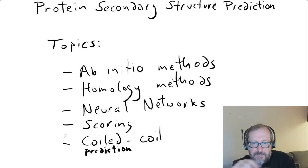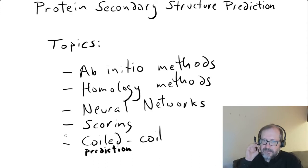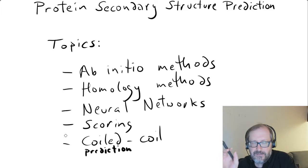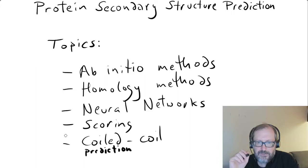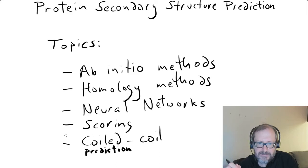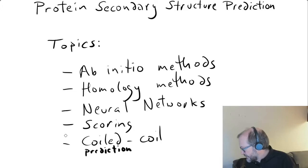What topics are we going to cover today? We'll start with ab initio methods — methods which start from a primary sequence, assuming you know only the primary sequence and not the sequence of any homologues or any structure. Then we'll go to methods based on homology, where we have more than one sequence available in a homologous protein family. Then we'll go on to neural network methods, talk about how to score the results, and lastly talk about predicting coiled coils.